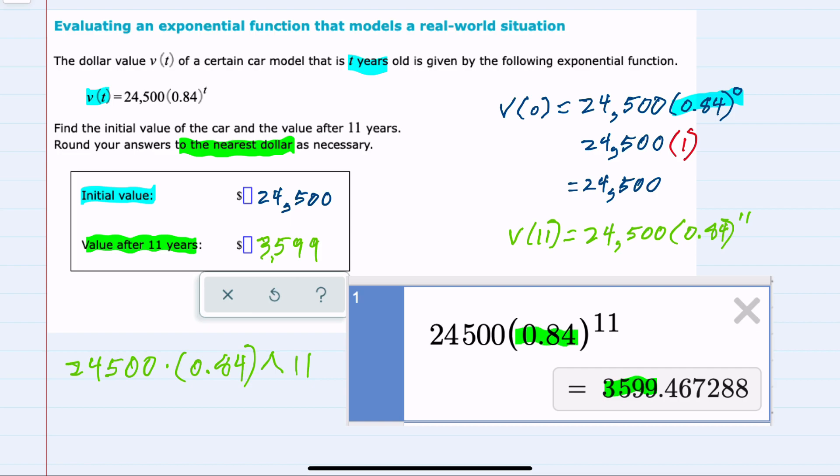And in this function, each year, it has only 84% of the value of the previous year. And when that 84% is taken 11 times, we're left with just that $3,599.